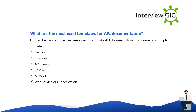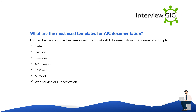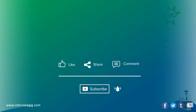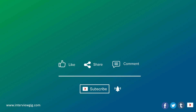What are the most commonly used templates for API documentation? Some free templates that make API documentation easier and simpler include: Slate, FlatDoc, Swagger, API Blueprint, REST Doc, Mr. Doc, and Web Service API Specification.